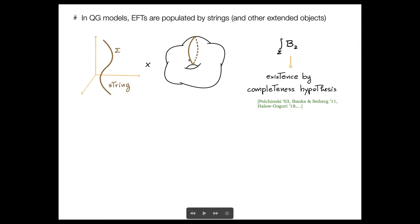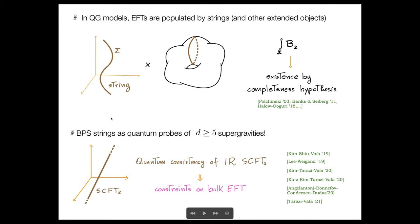From a purely EFT viewpoint, their existence simply follows by invoking the completeness hypothesis whenever there exists some corresponding two-form potentials under which these strings are charged. This viewpoint was adopted in a series of nice papers starting with Kim-Shiru Alpha 1, which consider BPS strings in supergravity defined in more than four dimensions. In particular, they showed how certain BPS strings admit a description in terms of an infrared superconformal fixed point, and by exploiting this superconformal structure, they argued that their quantum consistency in combination with coupling to the bulk sector leads to some very interesting constraints on this bulk sector.